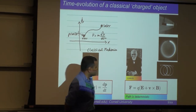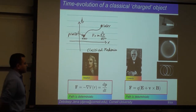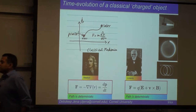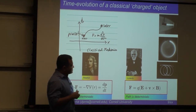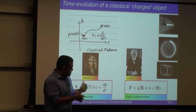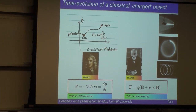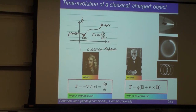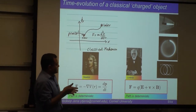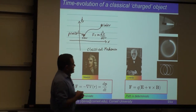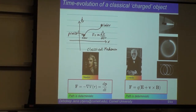For charged particles, the forces are the Lorentz force: the electric field times the charge of the particle, plus velocity cross product with the magnetic field. The first term we're generally well acquainted with; the second term leads to interesting effects such as the Hall effect, quantum Hall effect, and anomalous velocities.